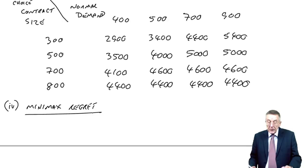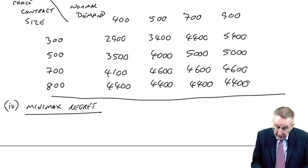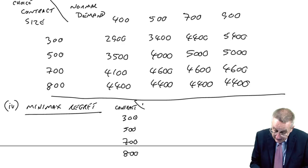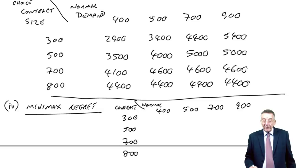Now, so I don't have to move up and down the screen too much, which gets confusing, I'll make it slightly smaller. The choice was the contract size: 300, 500, 700, or 800. The uncertainty was the normal demand: 400, 500, 700, and 900. And let me do what I did before, but do watch carefully and make sure you've got it. I'll start and perhaps you pause the video halfway through and see if you can finish it.